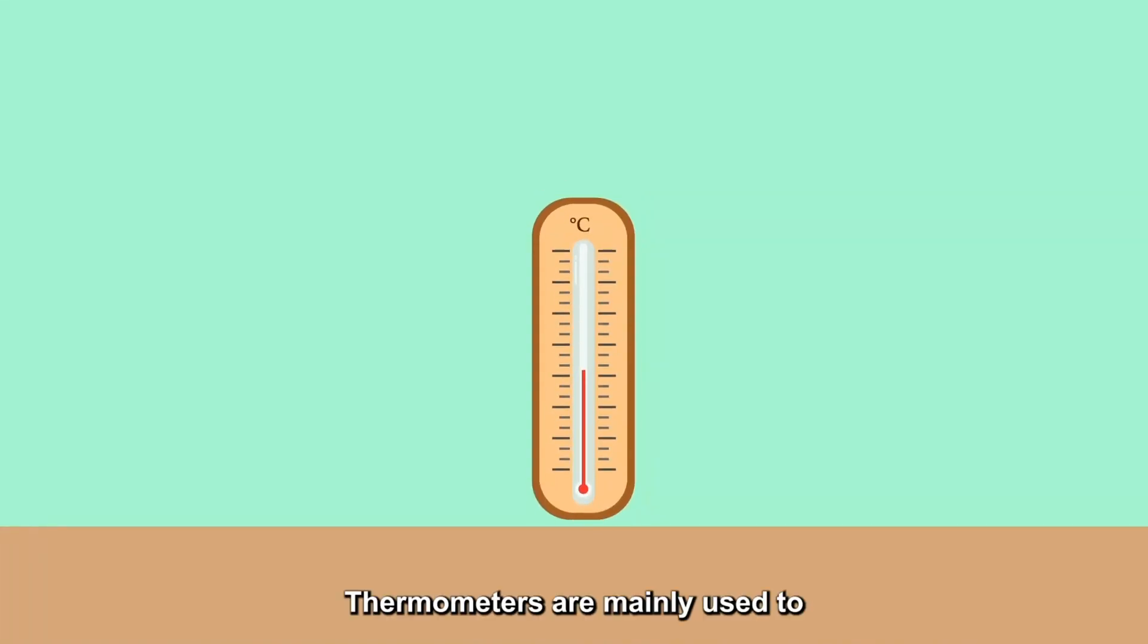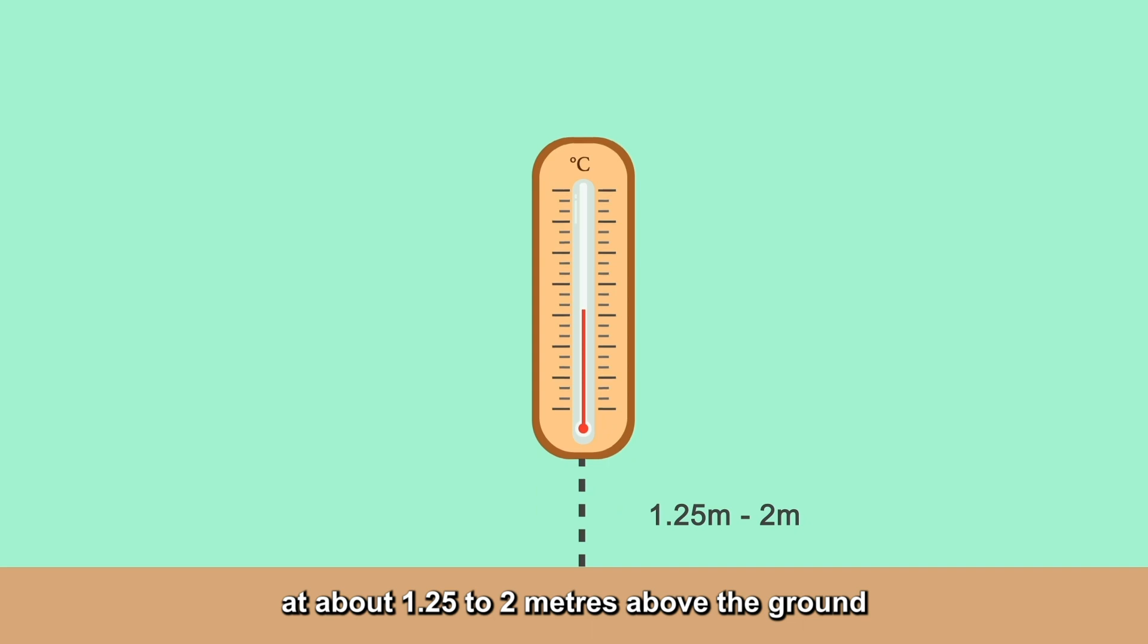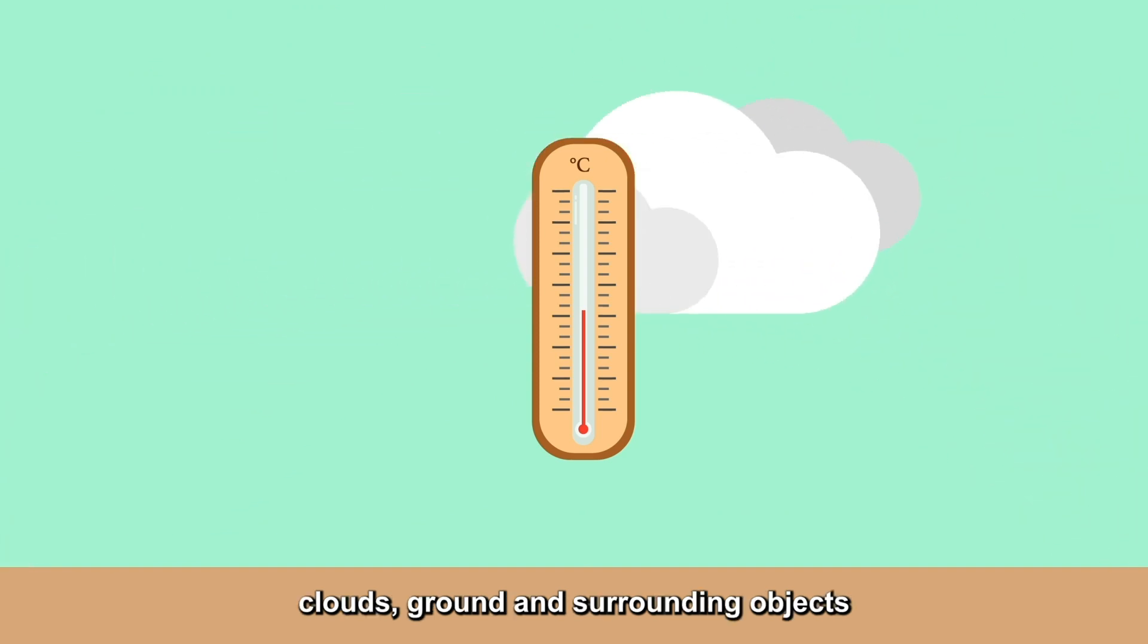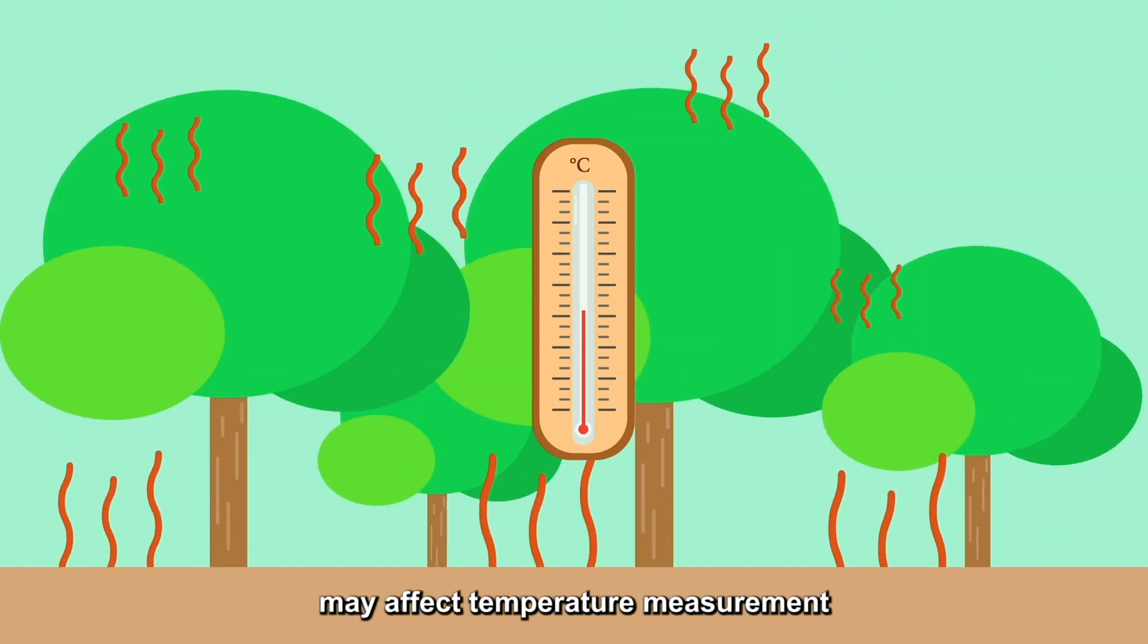Thermometers are mainly used to measure the outdoor air temperature, at about 1.25 to 2 meters above the ground. However, radiant heat from the sun, clouds, ground and surrounding objects may affect temperature measurement.